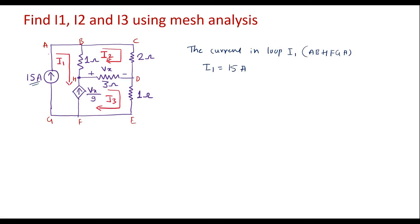Now we will concentrate on loop I2. In this circuit, we can see that in between node F and H, there is a dependent current source — that is, a voltage-dependent current source of magnitude Vx/9. This current is common to two loops, that is loop I1 and I3. Therefore, the first thing is we have to analyze this current source, as it is common to two loops.